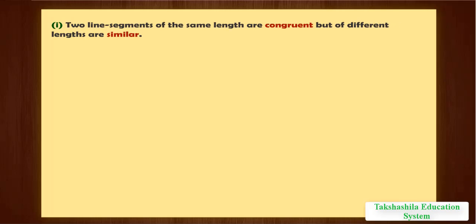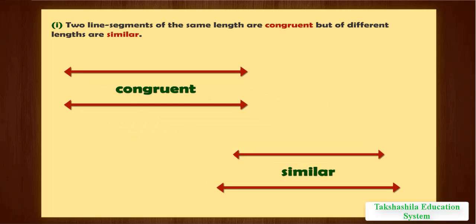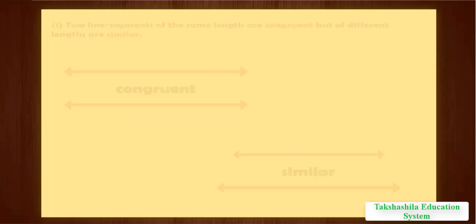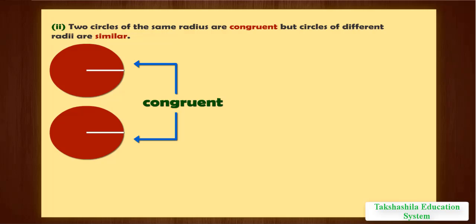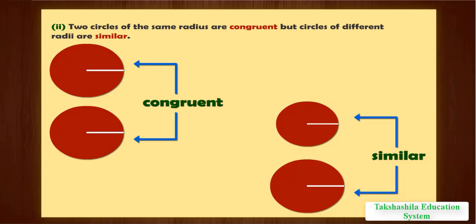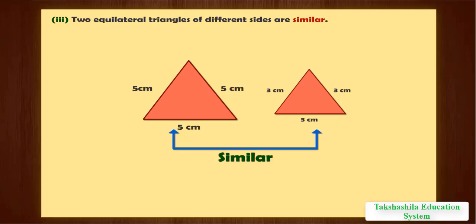Let's take examples of some similar objects. First, two line segments of the same length are congruent, but of different lengths are similar. Second, two circles of the same radius are congruent, but circles of different radii are similar. Third, two equilateral triangles of different sides are similar.